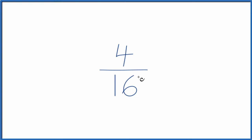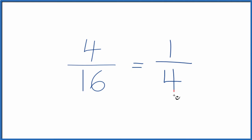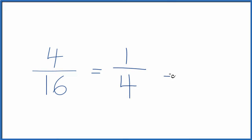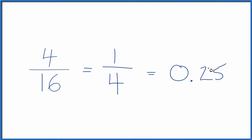With 4 sixteenths, I think we can simplify this because 4 goes into 16. 4 goes into 4, 1. So 4 divided by 4 is 1, 16 divided by 4 is 4, so 1 fourth. So the fraction 4 sixteenths, an equivalent fraction would be 1 fourth. And if you divided 4 by 16 or 1 by 4, you'd get the same thing, 0.25, because they're equivalent fractions.